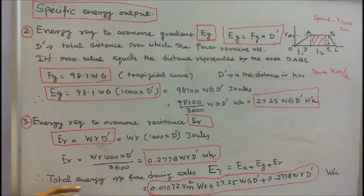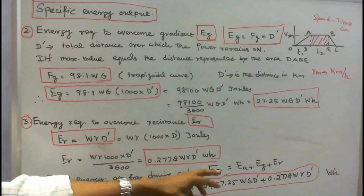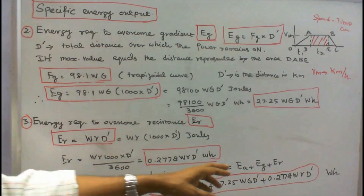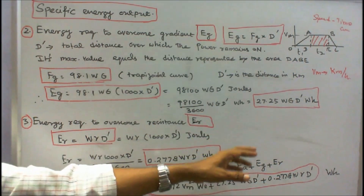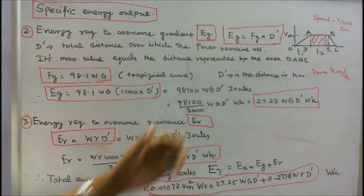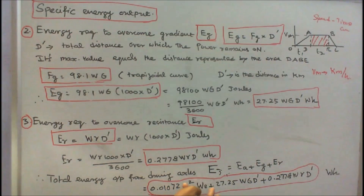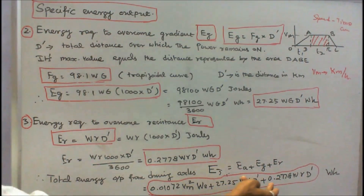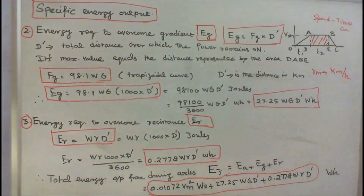Therefore the total energy output from driving axles E_T equals E_A plus E_G plus E_R: that is 0.01072 into W_E into Vm squared, plus 27.25 into W into G into D-dash, plus 0.2778 into W into R into D-dash, all in watt-hours.